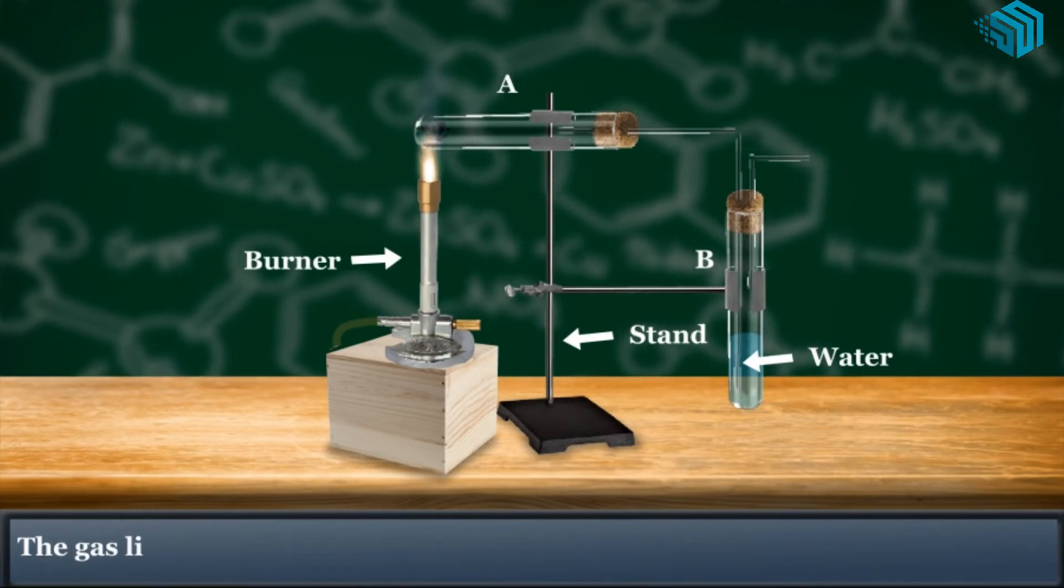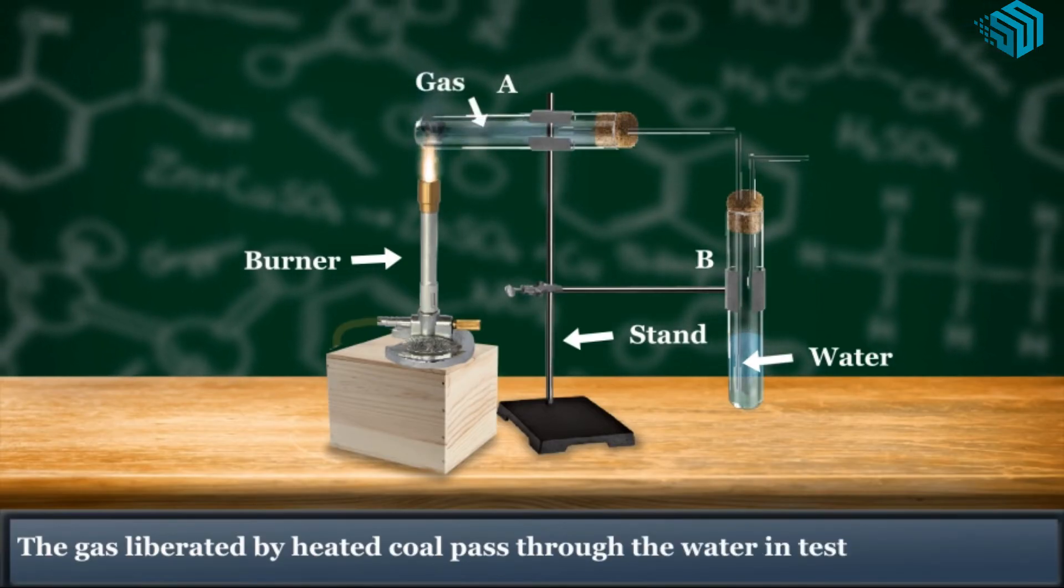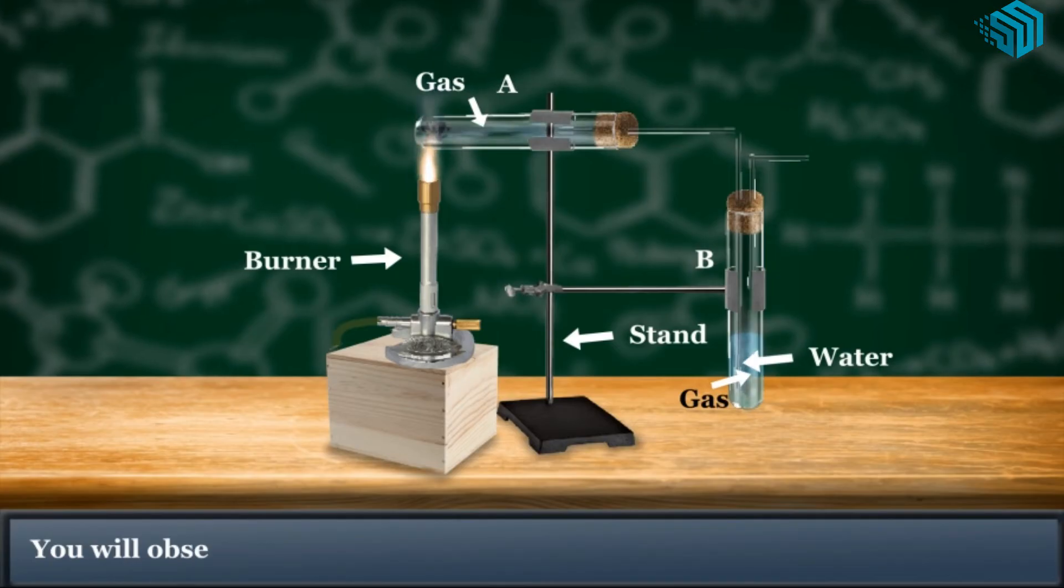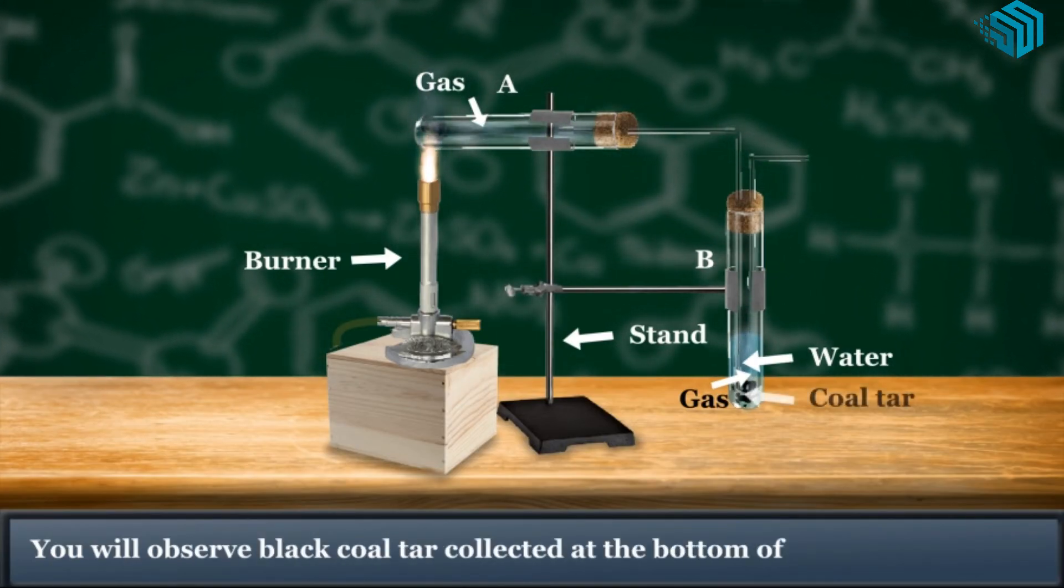The gas liberated by heated coal passed through the water in test tube B. You will observe black coal tar collected at the bottom of test tube B.